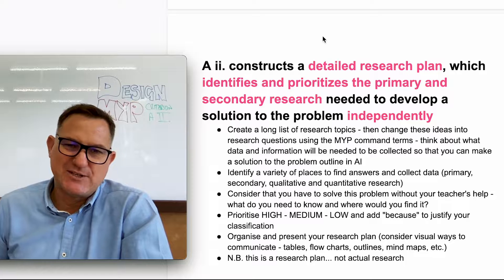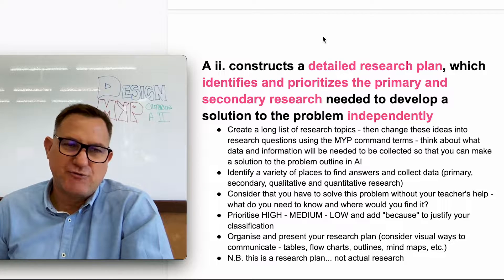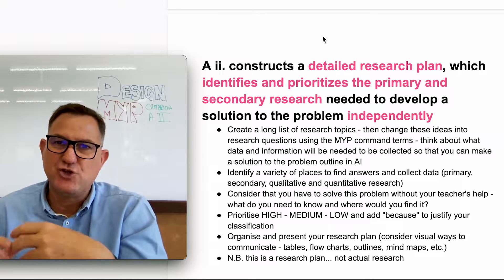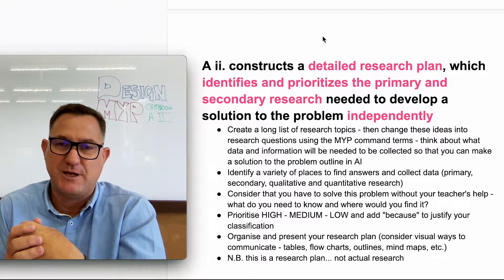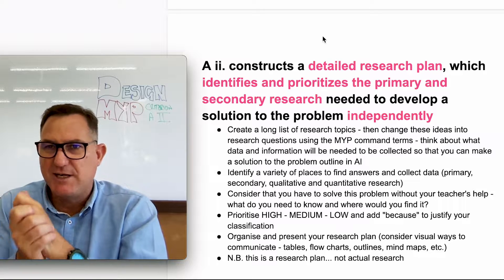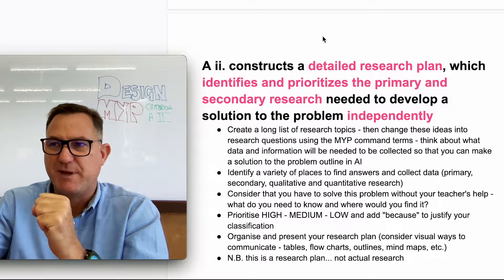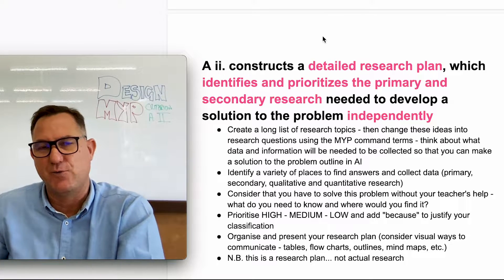The next part says to identify and prioritize primary and secondary research. If you're in middle school, you need to be aware of the difference. Primary research is research you conduct first-hand — interviewing somebody, experiencing something, or collecting a survey. Secondary research is when you watch a video, read a book, or get information off a website, meaning somebody else conducted the research and shared it.